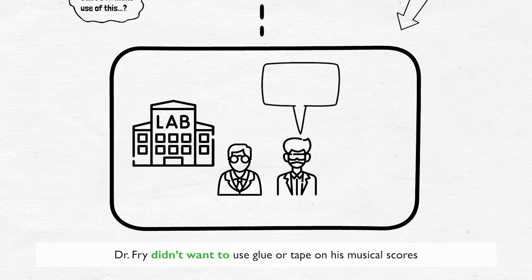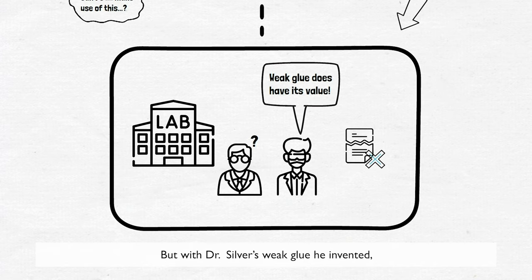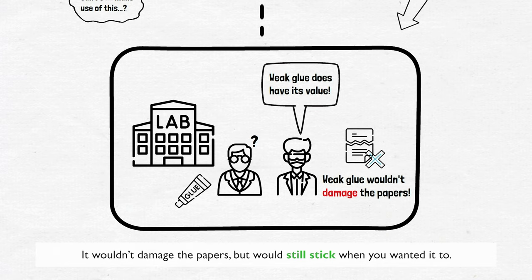Dr. Fry didn't want to use glue or tape on his musical scores, even on windy days, because it would damage the papers. But with Dr. Silver's weak glue he invented, it wouldn't damage the papers but would still stick when you wanted it to.